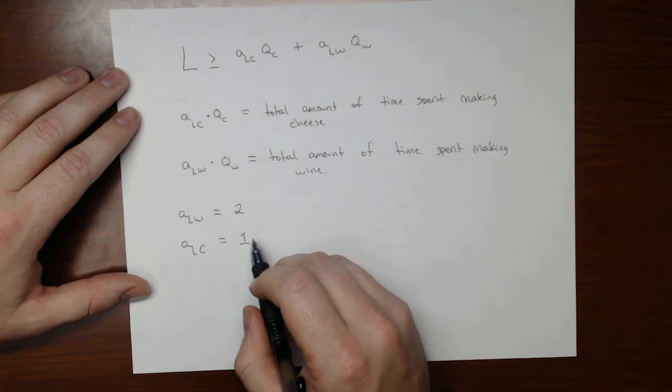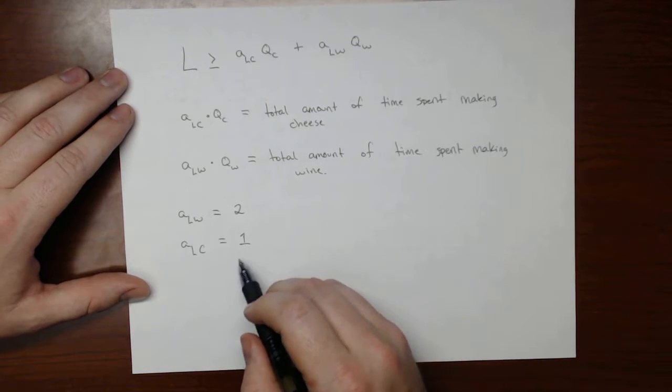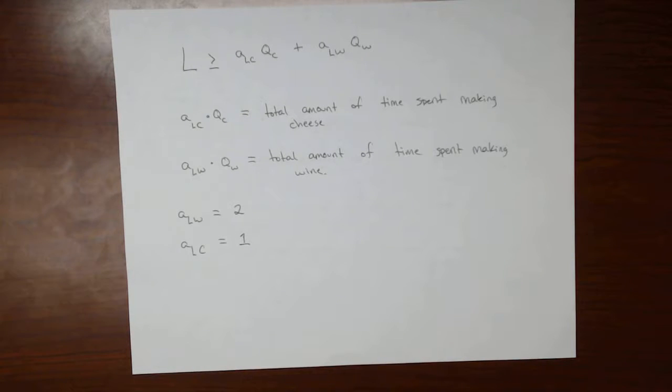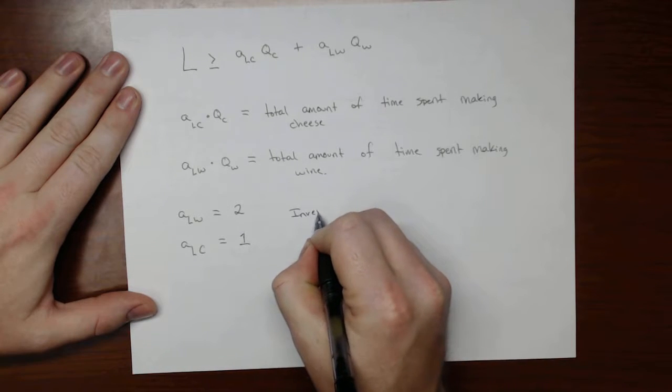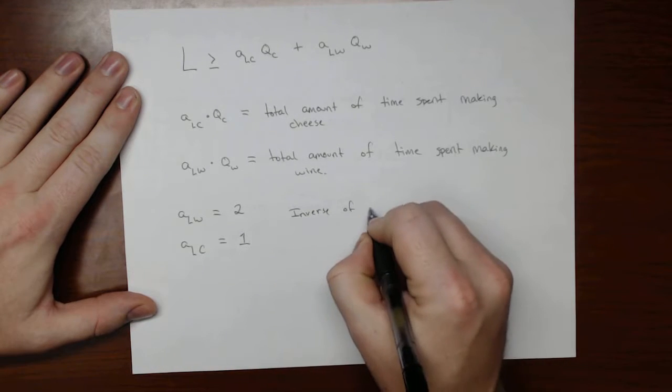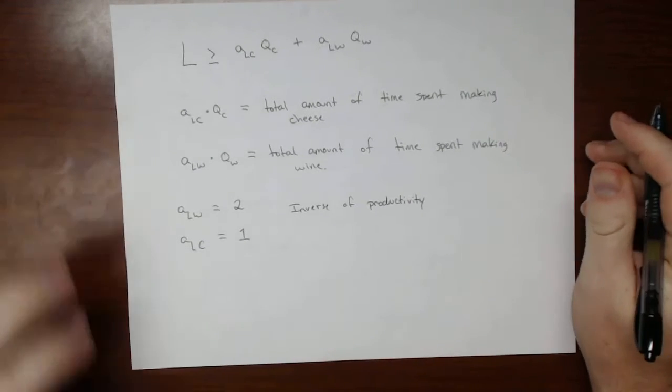And if people became less productive at making cheese, then this number would go up. So these numbers are the inverse of productivity. These are inverse of productivity.